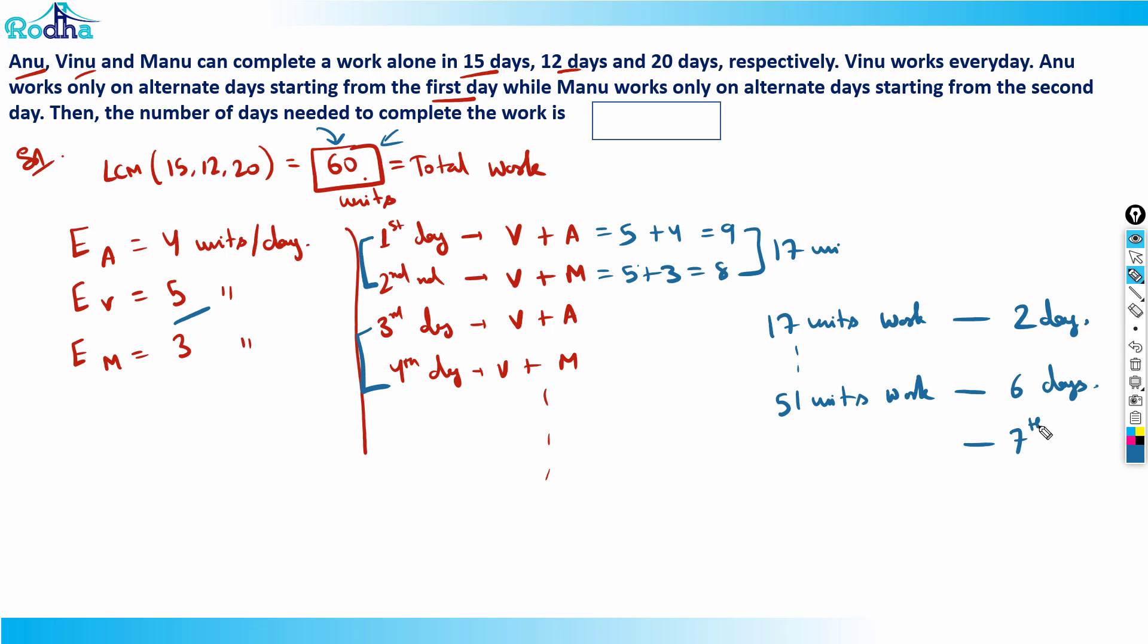Now on seventh day, Vinu plus Anu will come, and Vinu plus Anu will do 5 plus 4, which is 9 units of work, because seventh is an odd number of days and on odd days Anu is coming. They'll do 9 units work, so 51 plus 9 equals 60. Complete 60 units work is done on seventh day. So the answer for this question is 7 days.